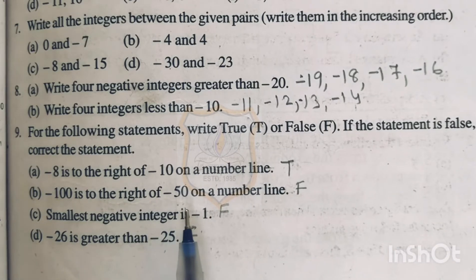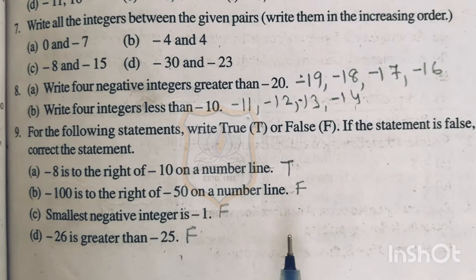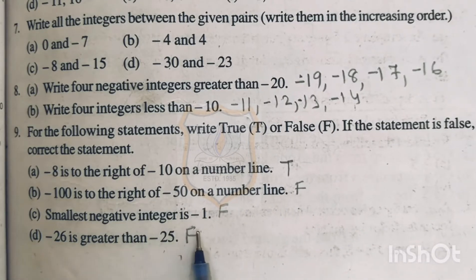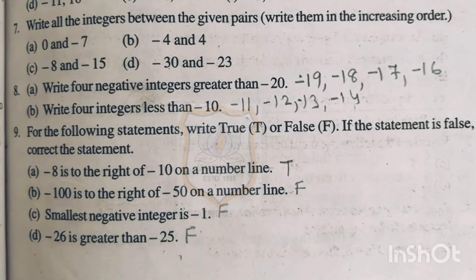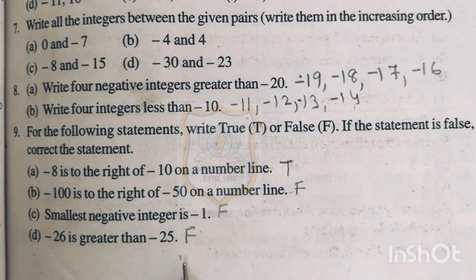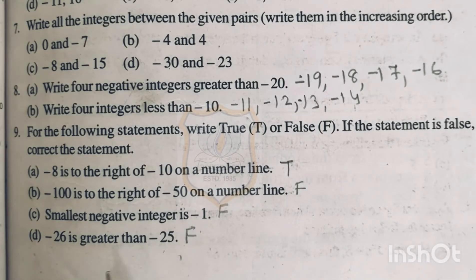Part C of question number 9: the smallest negative integer is minus 1. The statement is false — minus 1 is the greatest negative integer. Part D of question number 9: minus 26 is greater than minus 25. This statement is also false, because minus 26 is smaller than minus 25, not greater.